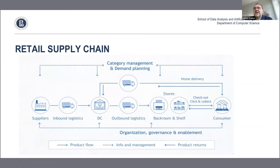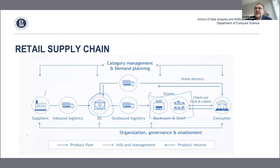To understand how retail operates, let's look at the retail supply chain. Everything starts with suppliers of goods and services, then there is logistics delivering to distribution centers. From distribution centers, outbound logistics brings goods to stores. In stores we have the backroom for storage and the shelf, which is the consumer-facing part. The consumer interacts and picks up products from the shelf.